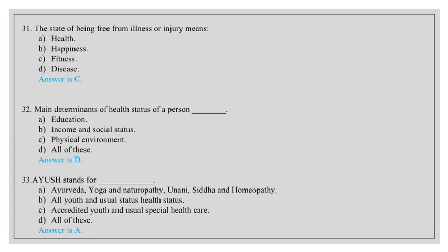Main determinants of health status of a person: education, income and social status, physical environment, all of these. Answer is D, all of these. AYUSH stands for Ayurveda, Yoga and Naturopathy, Yunani, Siddha and Homeopathy. All youth and usual status health status, accredited youth and usual special health care, all of these. Answer is A.